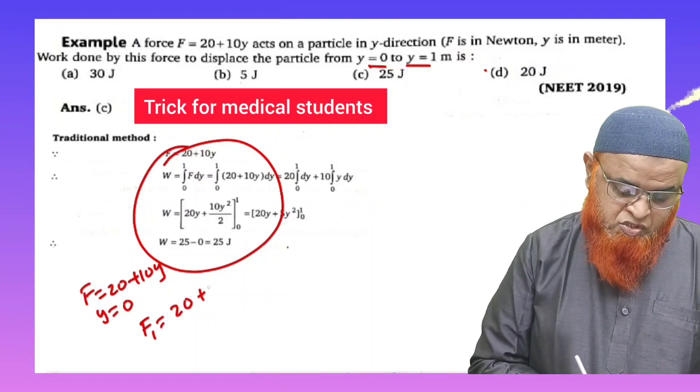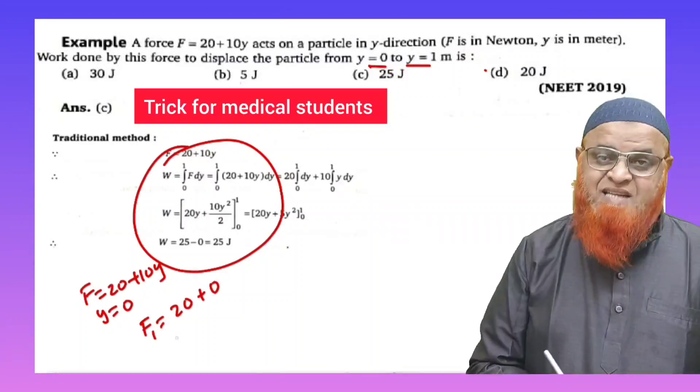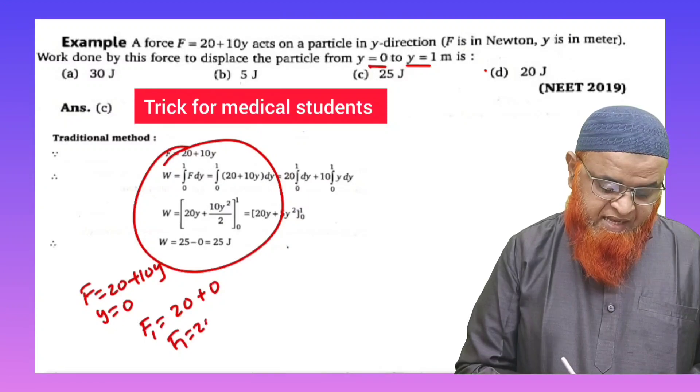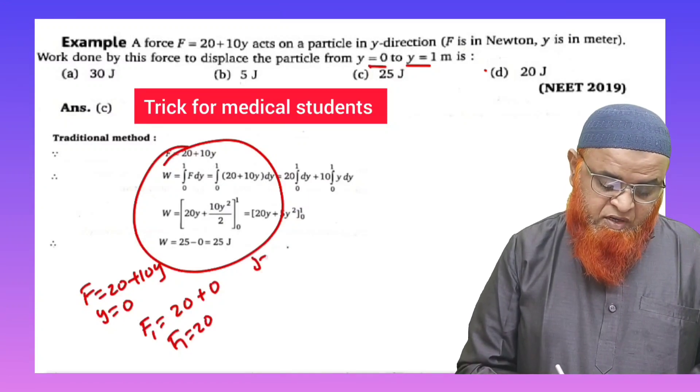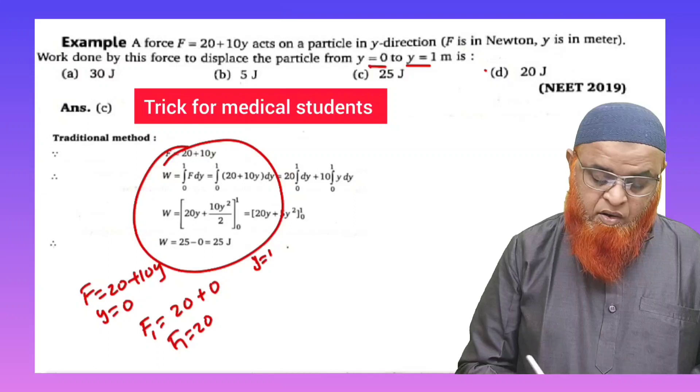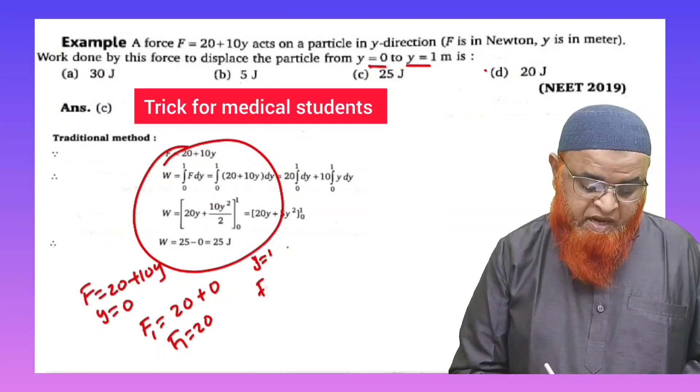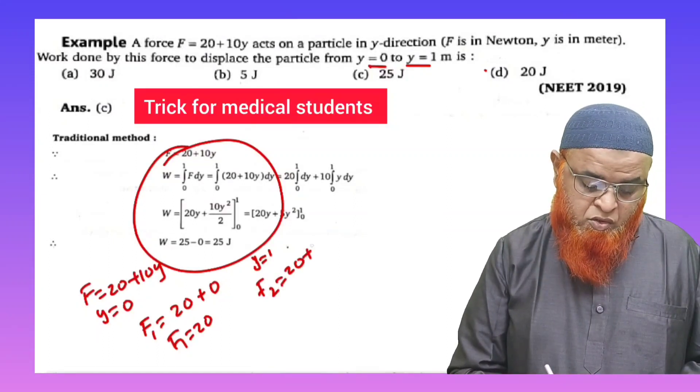So we're getting F1 as 20 here. Next, if y is equal to 1 according to the condition here, then you will be getting F2 is equal to 20 plus 10 into 1. That is, F2 is going to be 30 here.